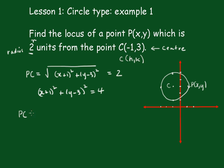So, our PC this time is equal to the square root of x minus h, all squared, plus y minus k, all squared, is equal to r.